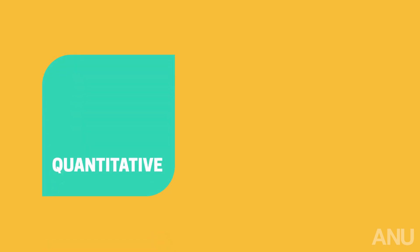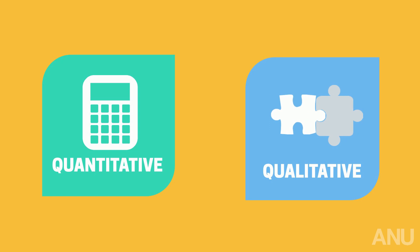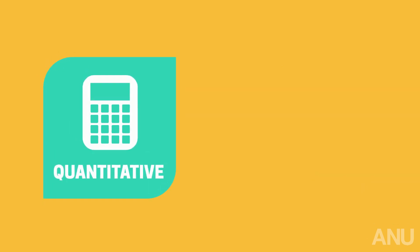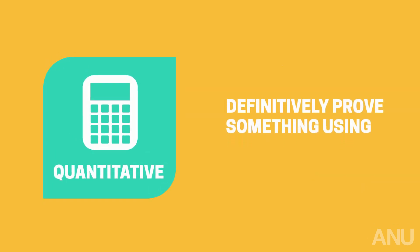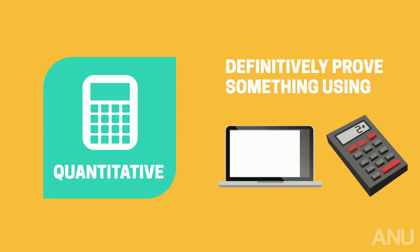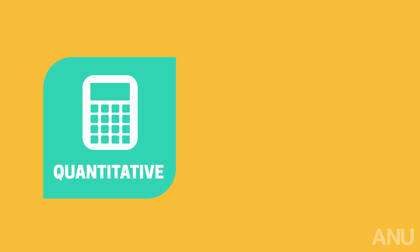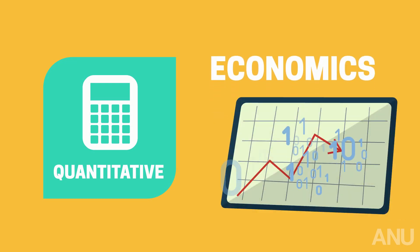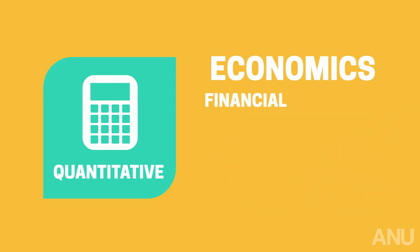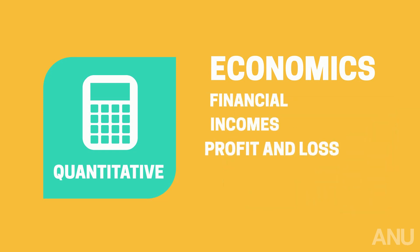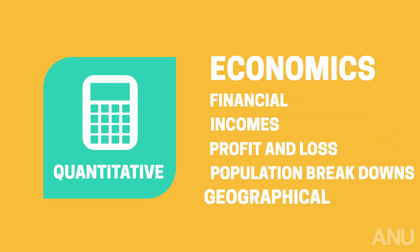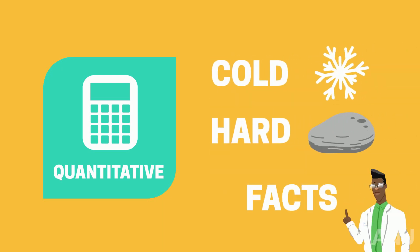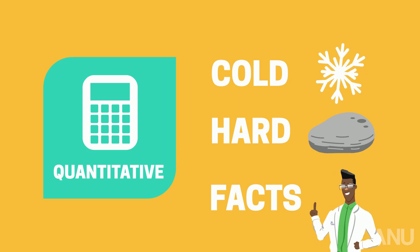Let's get into the nitty gritty by spelling out each methodology's approach. Quantitative research seeks to definitively prove something using numbers and measurable forms. When it looks into a topic — say economics — it looks at all the tangible data around that topic: financial information, incomes, profit and loss, population breakdowns, even geographical information. It tends to state cold, hard facts that cannot in any way be debated.